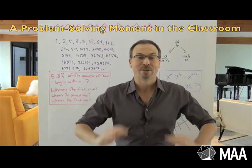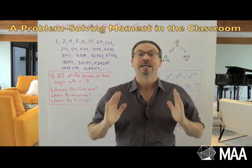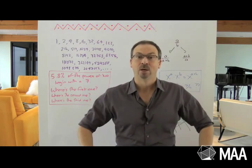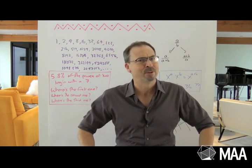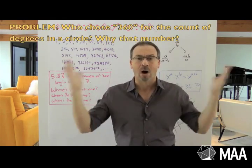I have this basic question. Whether you're doing middle school geometry or high school geometry, here's a natural question about angles. We say there are 360 degrees in a circle. Who chose the number 360 for that count? Why the number 360?